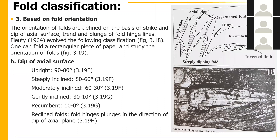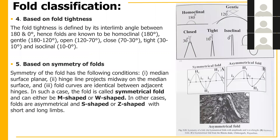Another classification is based on fold tightness — the interlimb angle between the two limbs. Homoclinal means 180 degrees. Between 180 and 120 degrees it is gentle. Between 120 and 70 degrees it is open. Between 70 and 30 degrees it is closed. Between 30 and 10 degrees it is tight. Between 0 and 10 degrees it is isoclinal. If it is zigzag, it is elastica, which has a proper mathematical equation.